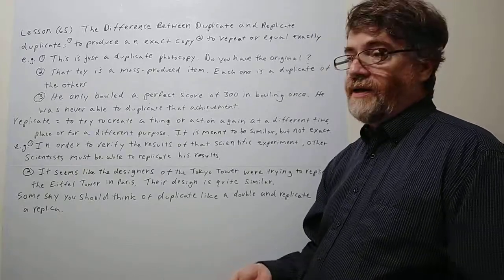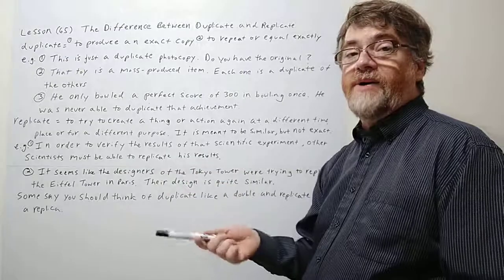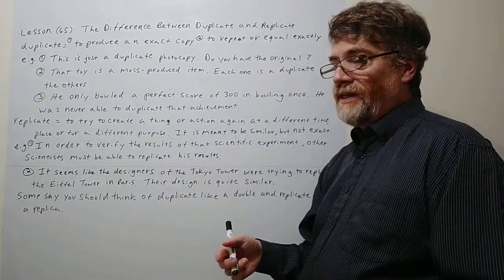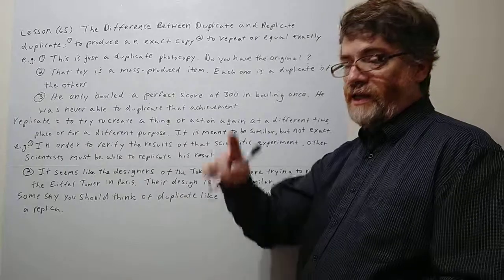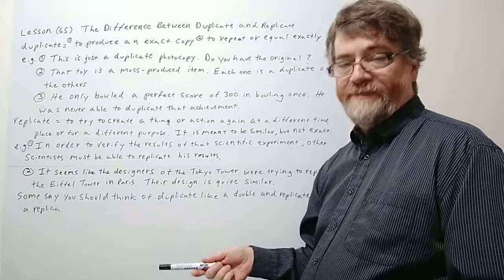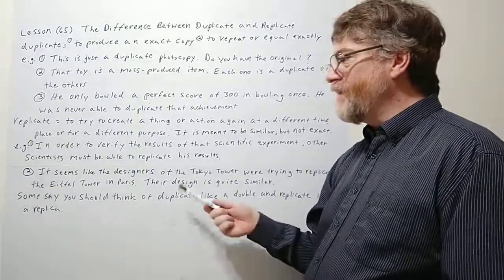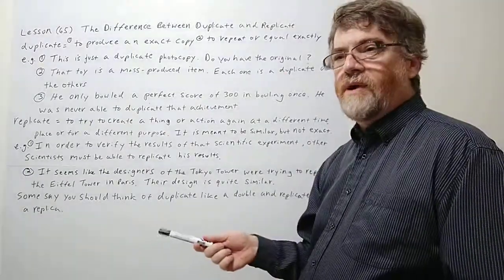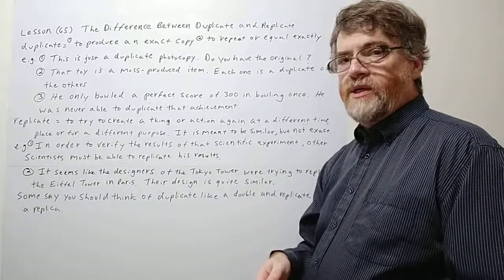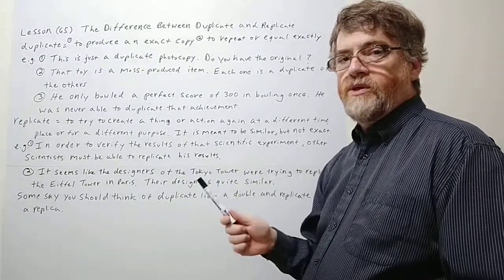We call that a replica, just like the Eiffel Tower in Paris. Maybe in the Paris tourist shops they're selling little small ones that are only like one foot high or something like that. That would be a replica. So think of it in that sense and then you could probably distinguish more between when we would use duplicate and when we would use replicate.